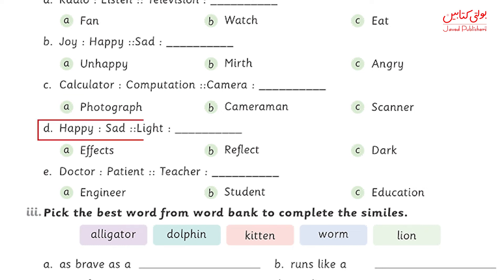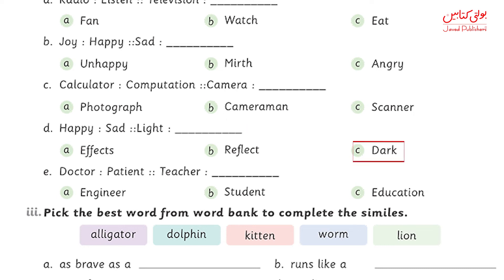D is: happy is to sad. Here you can see we are talking about opposites. So light is to — now you need to find the opposite from the options — and you can see very clearly the answer is dark.